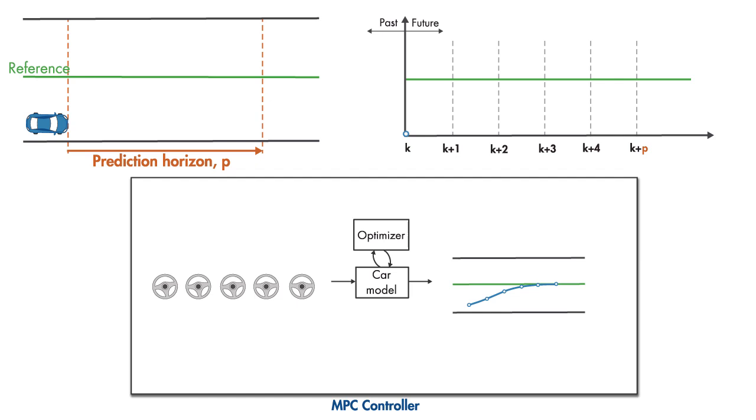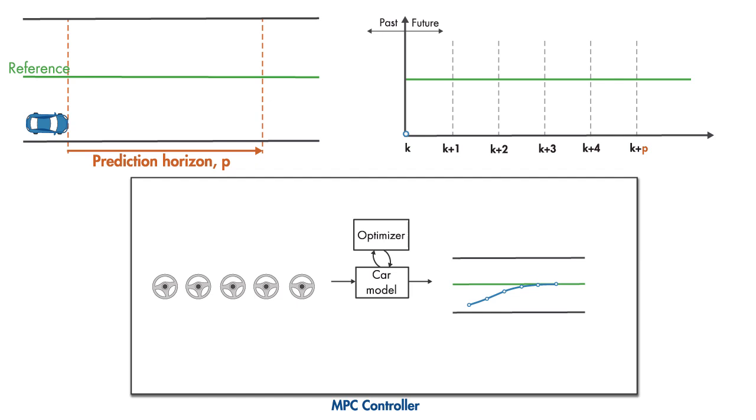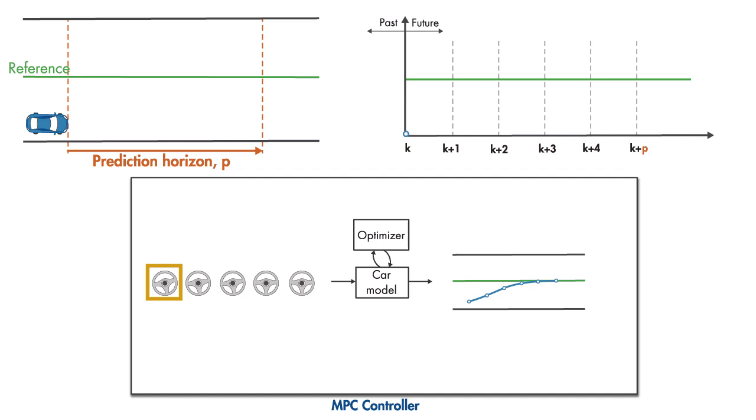At the current time step, MPC applies only the first step of this optimal sequence to the car and disregards the rest. Based on the applied steering wheel angle, the car travels some distance.